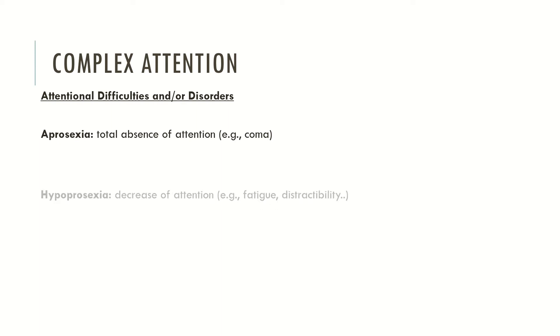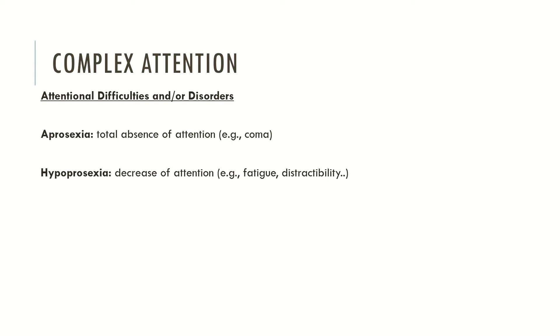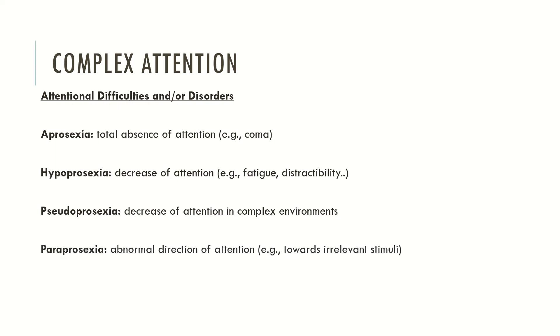Also, we can find several attentional difficulties or disorders. I will just describe a summary of all the attentional difficulties, because I will produce different videos in the future specifically talking about these aspects. Typically: Aprosexia, which is the total absence of attention, typically in coma. Hypoprosexia, which is the decrease of attention. Pseudoprosexia, decrease of attention in complex environments. Paraprosexia, abnormal direction of attention — typically when individuals start to pay attention to irrelevant stimuli, it seems that there are some impairments in the attentional process. And Hyperprosexia, which is an excessive increase of attention, typically observed in bipolar disorder when individuals have a manic crisis.